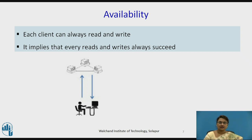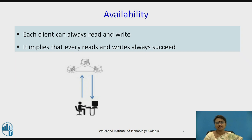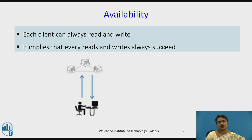Next comes Availability. Availability means that every time the server should be ready and the data should be given — 100% data should be available. In another way, each client can always read and write at any time. That is called availability. It implies that every read and write always succeeds. The system should be available all the time for both read and write operations.